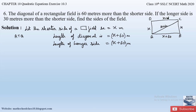Side AB equals CD, and side BC equals AD. All angles are equal to 90 degrees. So if you observe, triangle ABC forms a right-angled triangle. For triangle ABC we can now apply the Pythagorean theorem to find the value of x.